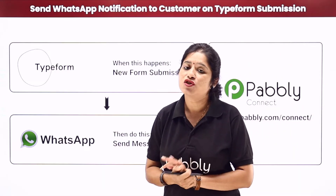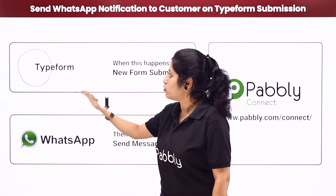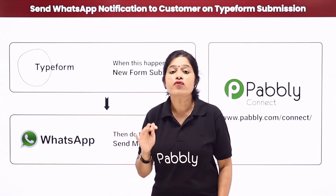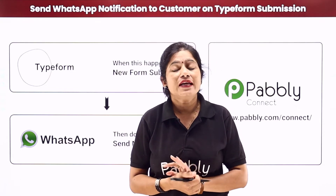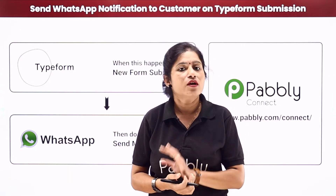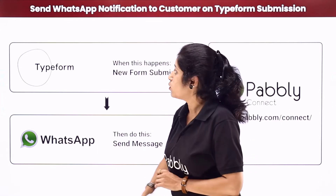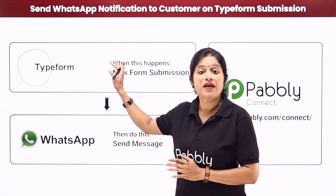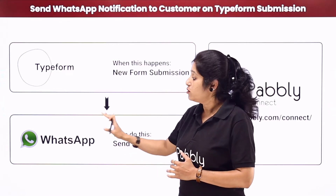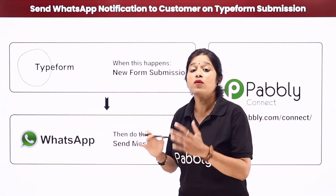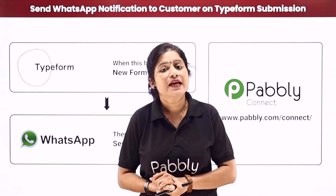Let's take an example: you have created a feedback form using your Typeform account. Now you want that whenever any of your customers fills that feedback form, a message should be sent to them on their WhatsApp number. To do that manually, you would need to collect customer details from the Typeform submissions, compose a message in WhatsApp, and send it — but this would be a time-consuming and tiresome process.